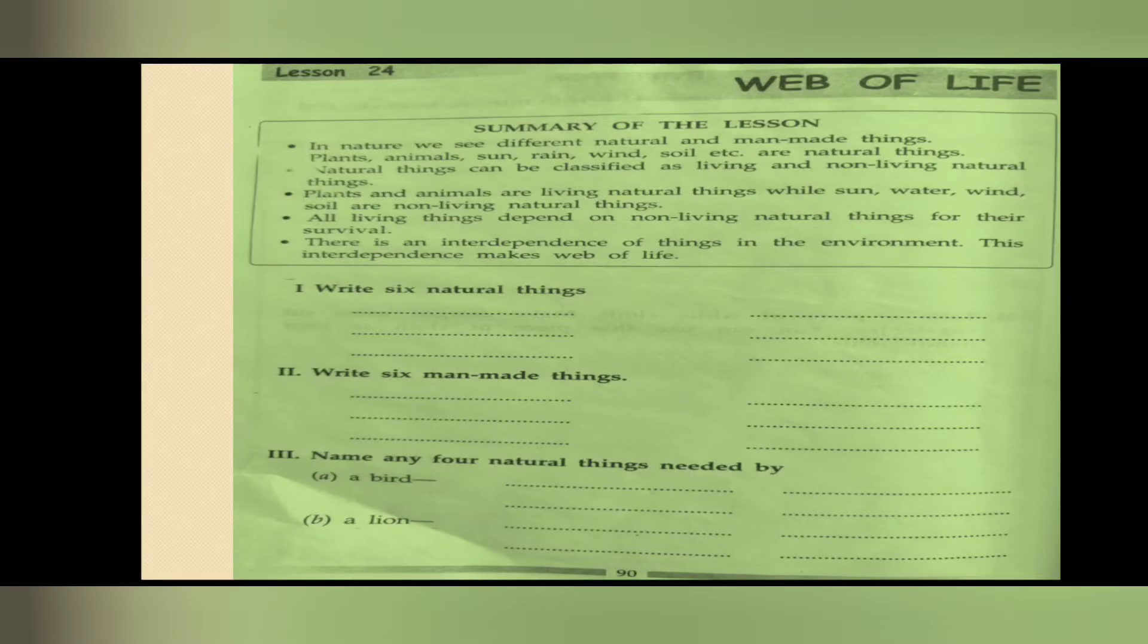Now all living things, like plants and animals, depend on non-living things like sun, water, wind, soil for their survival. There is an interdependence of things in the environment. This interdependence makes the web of life. Everyone depends on each other, and this interdependence creates the web of life.